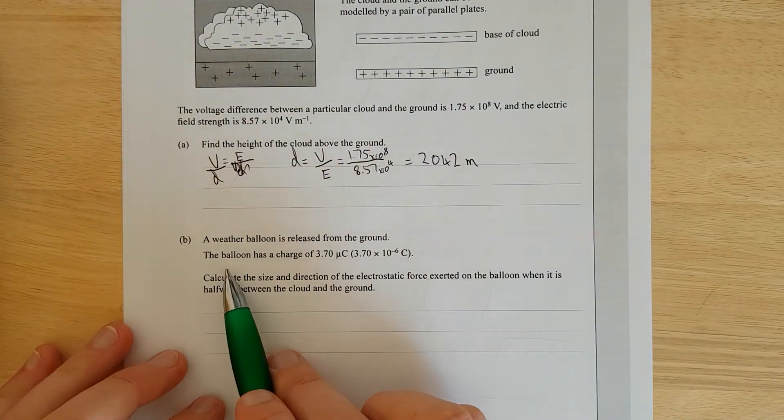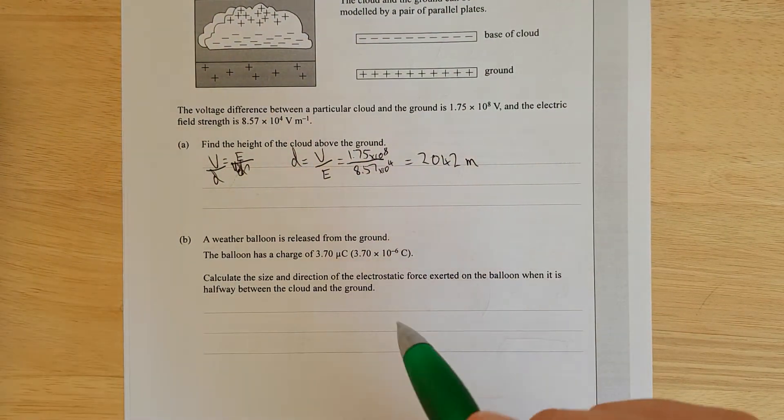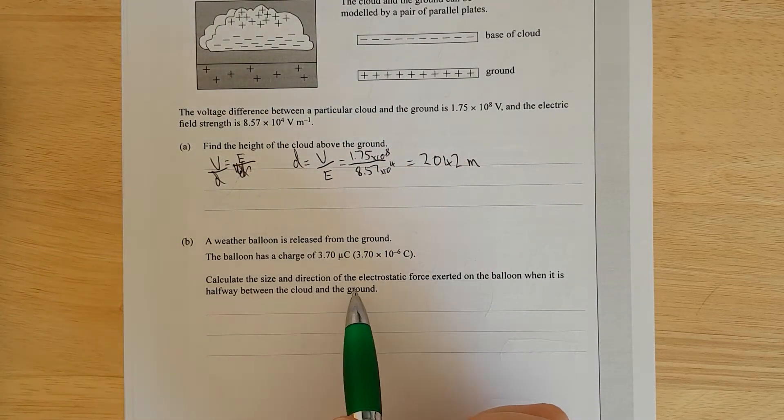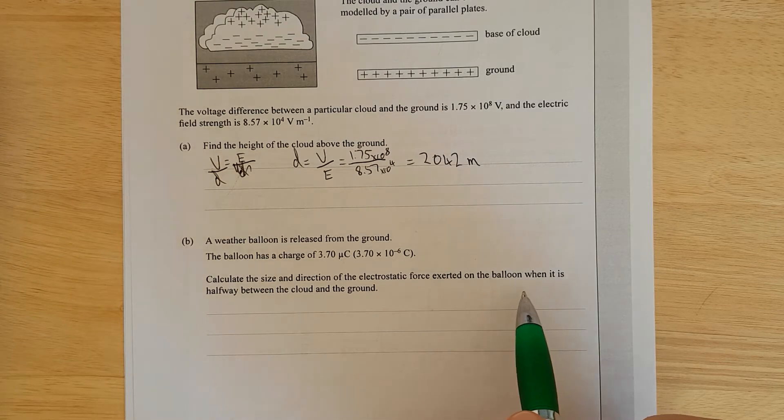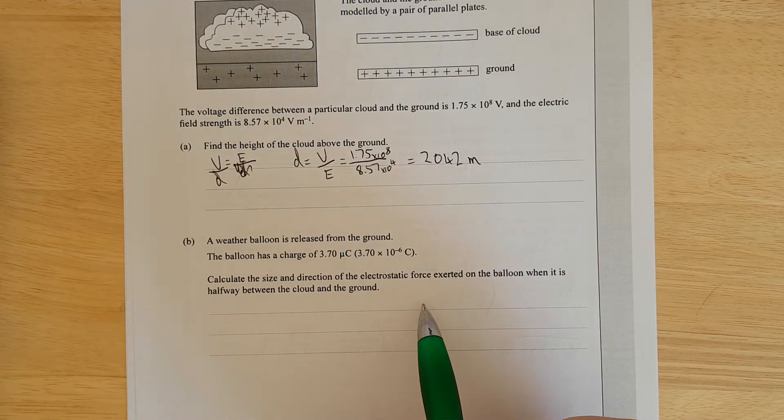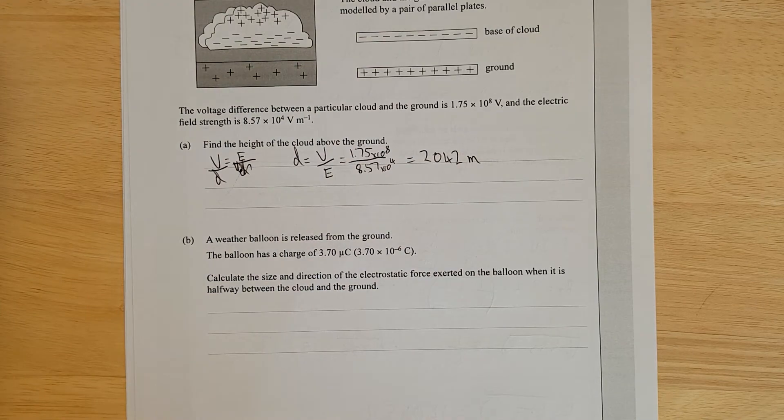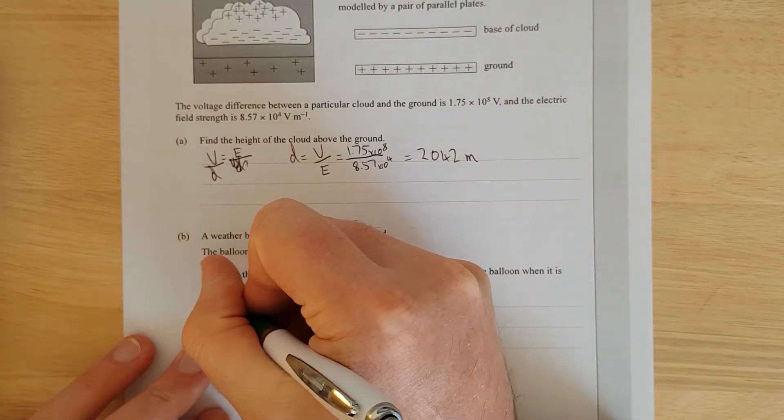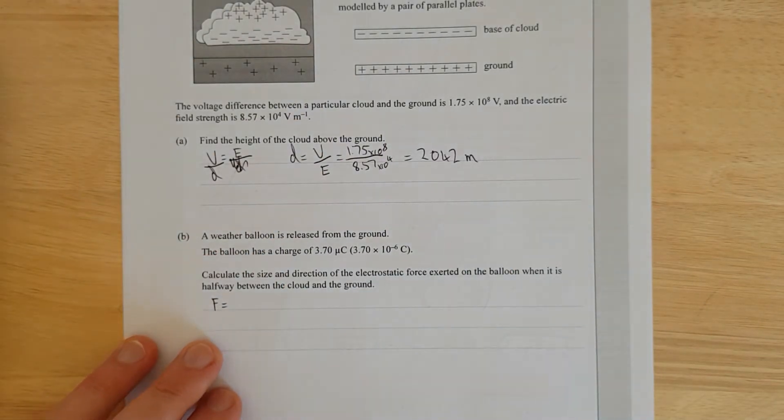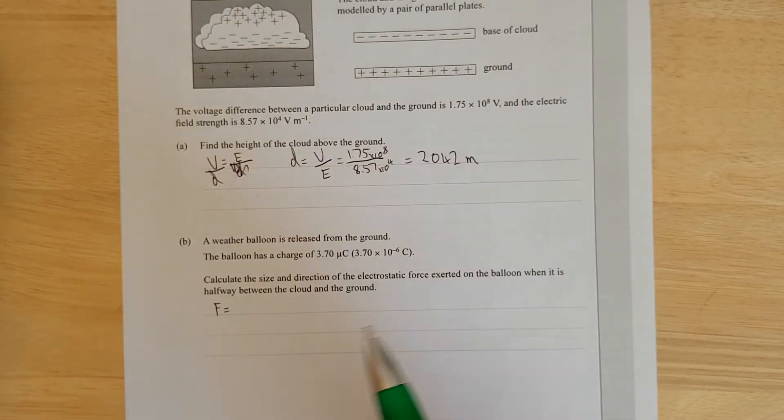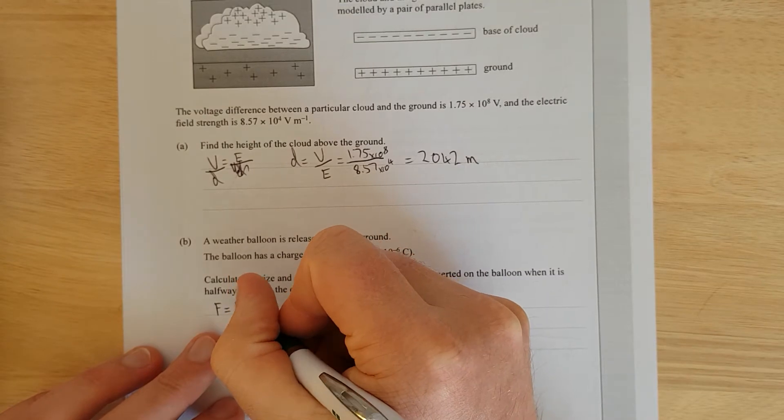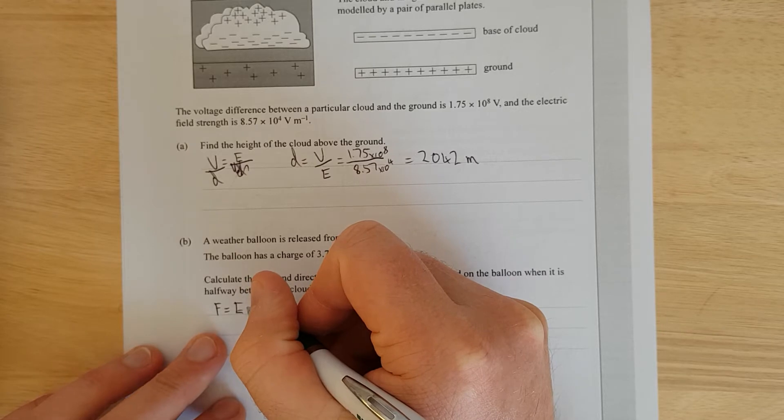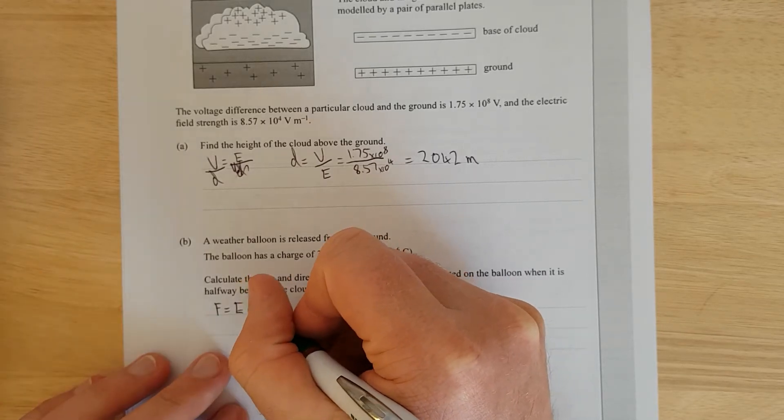Right, where the balloon is released from the ground, the balloon has a charge of 3.7 times 10 to the negative 6 coulombs. Calculate the size and direction of the electrostatic force acted on the balloon when it is halfway between the cloud and the ground. In your formula sheet, F equals, so this is analogous to the gravitational formula. The analogy for mass is charge, is EQ.